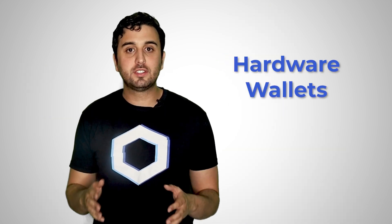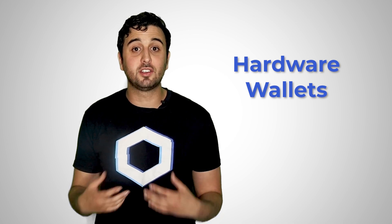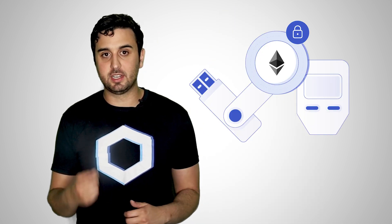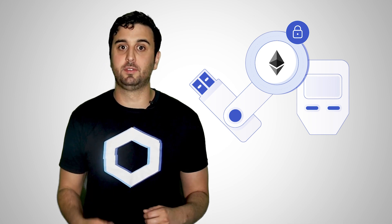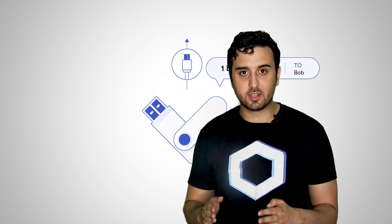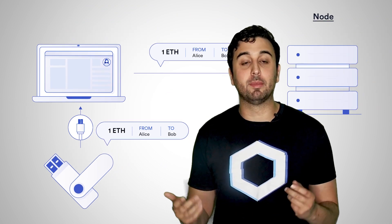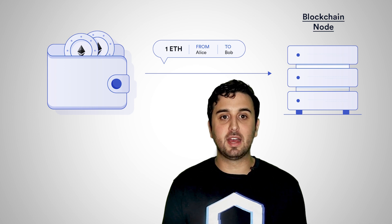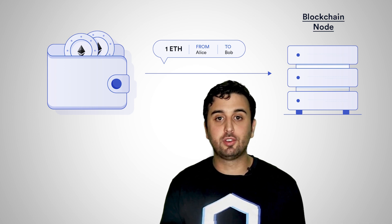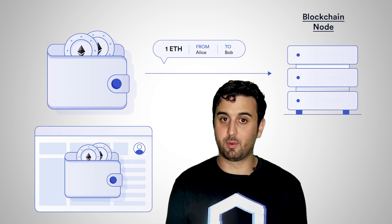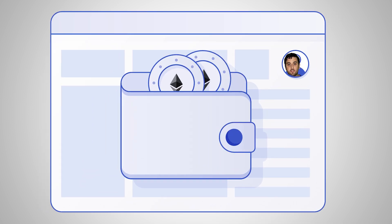Hardware wallets are physical devices explicitly designed to act as highly secure crypto wallets. They typically have a screen and buttons which act as an interface. The generation and signing of transactions occur solely within the hardware wallets themselves. You can then connect hardware wallets to a computer, typically via USB, to send the signed transactions to a blockchain. Sending transactions is handled by separate software downloaded to the computer, often a software wallet. Even when using a software wallet as an interface, all hardware wallets' private keys are kept on the hardware wallet.